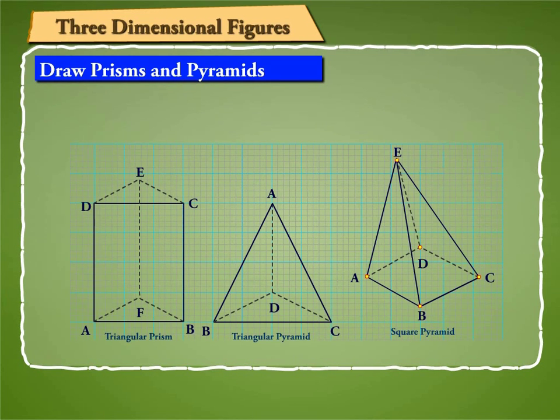A, B, C, D, E are its vertices. AB, BC, CD, AD, AE, BE, CE and DE are its edges.